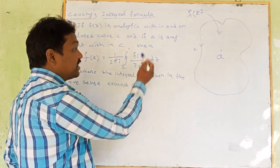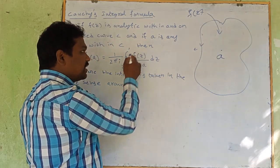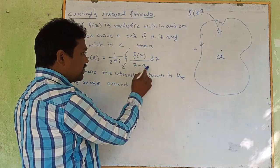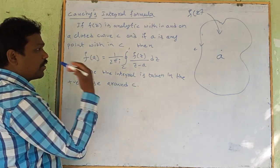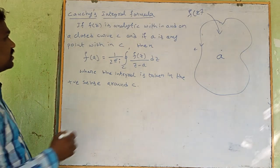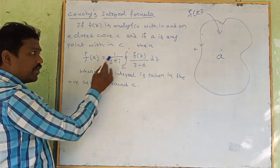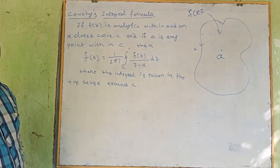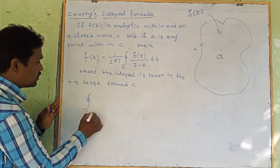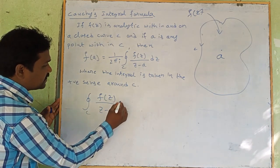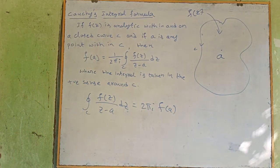Note that F(z) by (z minus a) is not analytic within C because z equals a is a singular point. The integral is taken in the positive sense around C. Rearranging, the closed integral over C of F(z)/(z minus a) dz equals 2πi times F(a). This is the most important formula.